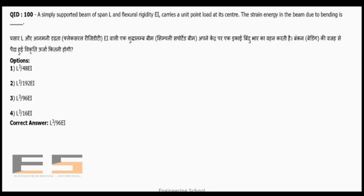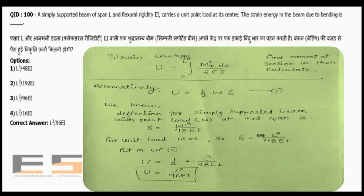Question 100: For a simply supported beam of span L and flexural rigidity EI carrying a unit point load at its center, the strain energy due to bending is L³/(96EI). Using the formula U = ½ × W × δ, with W = 1 and δ = WL³/(48EI) for a simply supported beam with central point load, substituting gives U = L³/(96EI). Thanks for watching, please subscribe, like, and share.